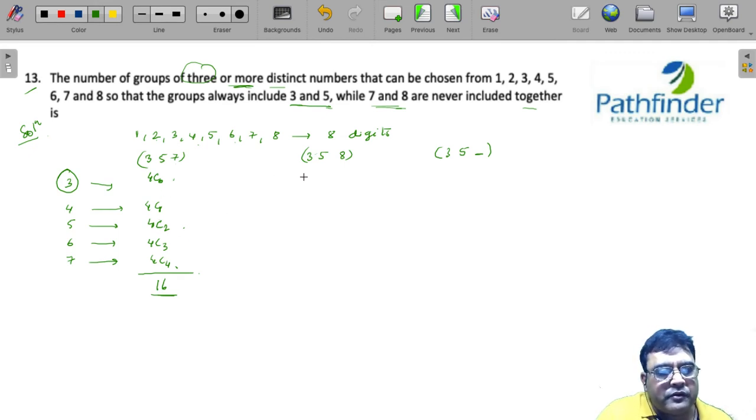Similarly, for 3, 5 and 8, you will have similar numbers. 4C0, 4C1, 4C2, 4C3 and 4C4. So, 16 numbers.